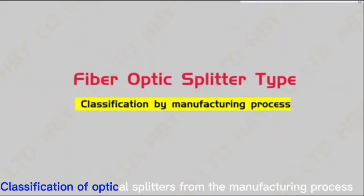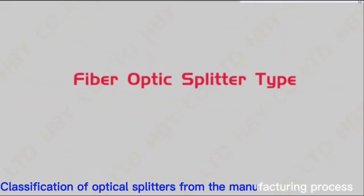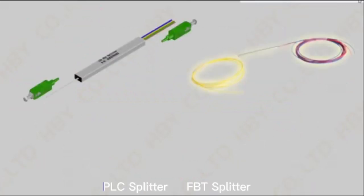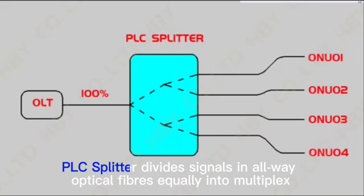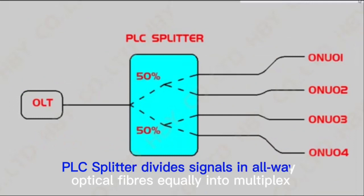Classification of optical splitters by manufacturing process: PLC splitter and FBT splitter. PLC splitters divide signals from one optical fiber equally into two or multiple fibers.